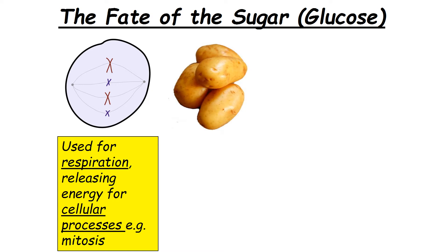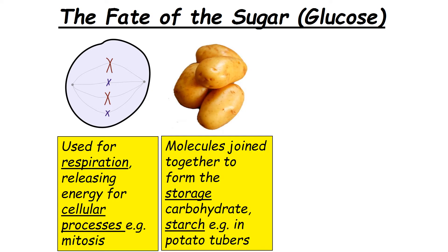The second fate is storage: glucose molecules are joined together to form starch, a more complex carbohydrate. For example, potato plants send excess glucose down to their roots and store it as starch in the tuber. Starch is basically glucose joined together. Humans dig that up and eat it, but if left it would grow into a new potato plant the following year.